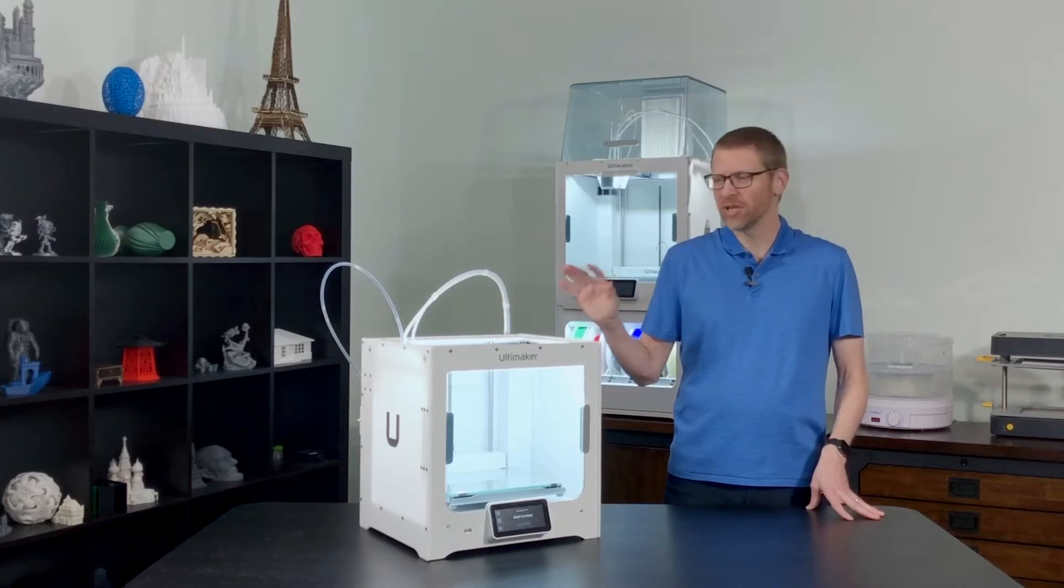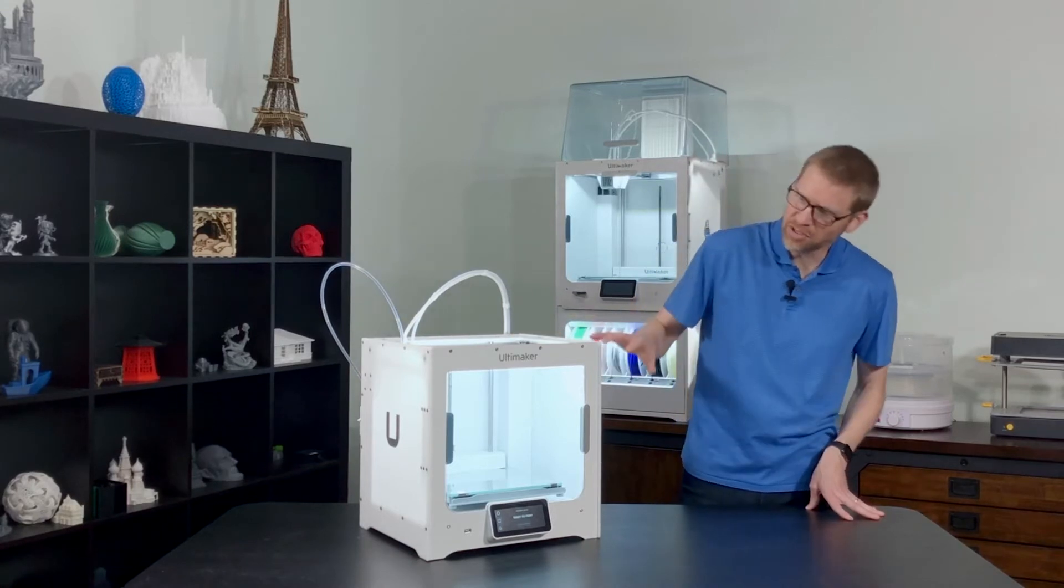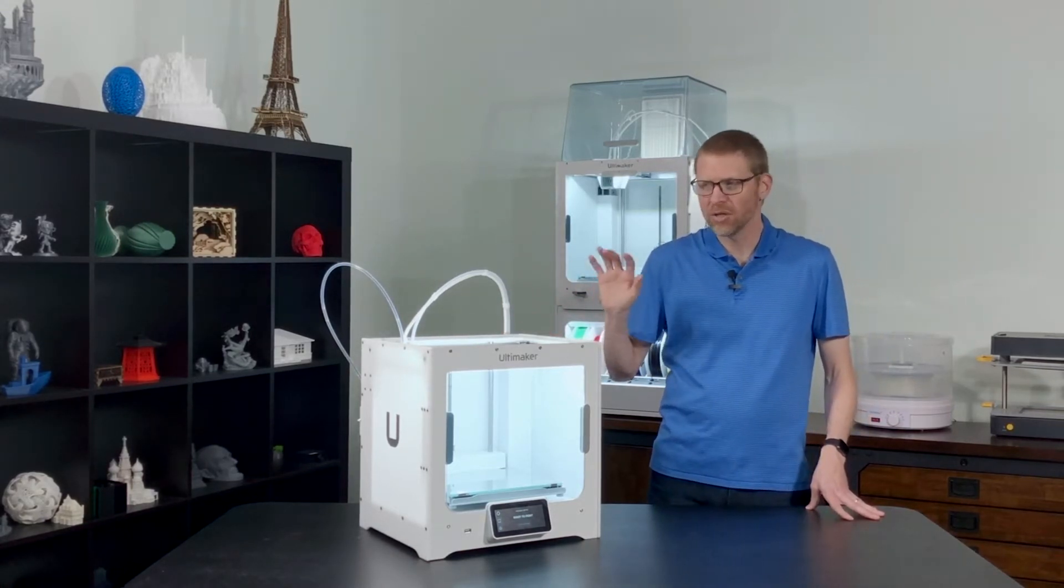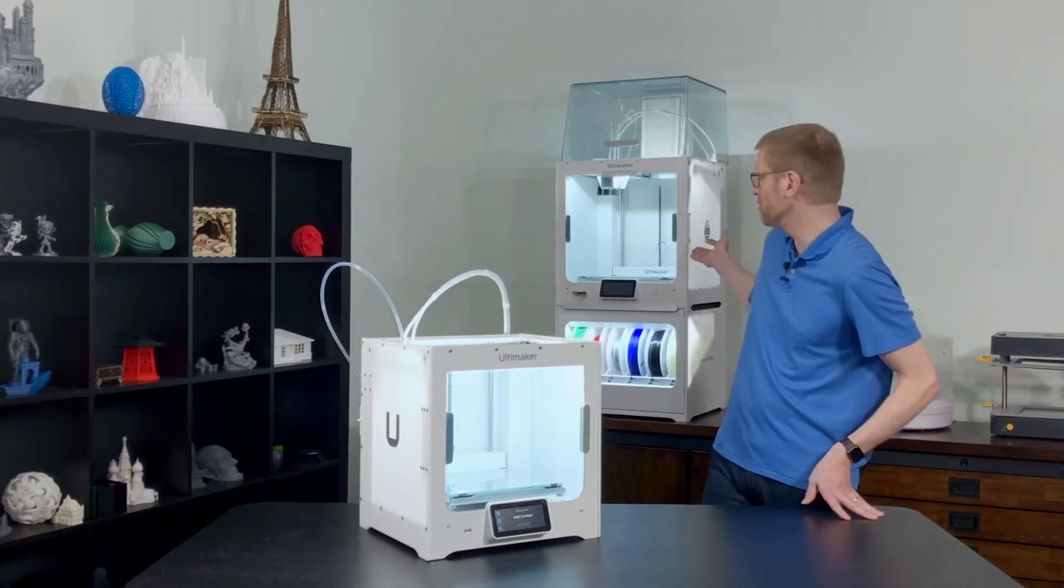This is Ultimaker's latest introduction to the S line of 3D printers, their studio series. As you can see, it's a similar size as the Ultimaker 3, but it has a lot of new features packed into it. Pretty much everything that you get from its big brother, the Ultimaker S5.